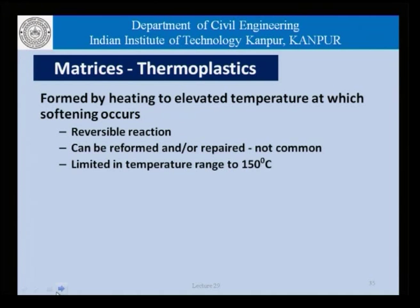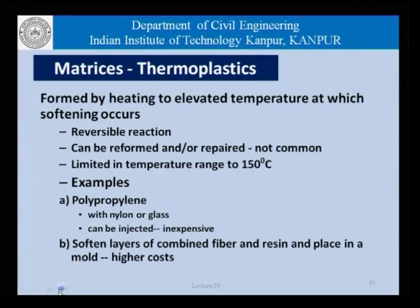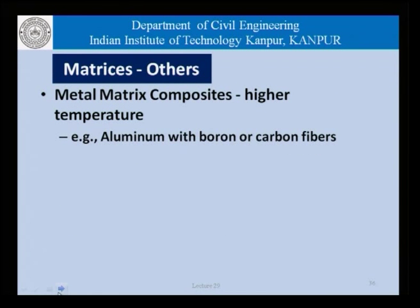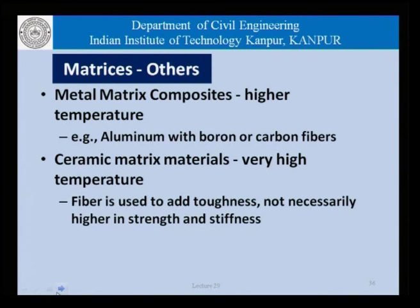The reversibility of thermoplastics limits the range of temperatures up to which they can be used, because after that they soften. Examples include polypropylene with nylon or glass. Other matrices include metal matrix composites, which are good for high temperature applications such as aluminum with boron or carbon fibers, and ceramic matrix materials which are very high temperature resistant — where fibers are used to add toughness and not necessarily higher strength and stiffness.